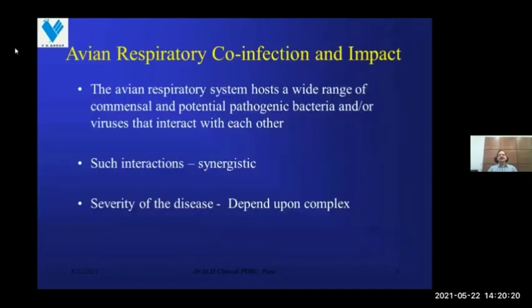The avian respiratory system hosts a wide range of commensal and potential pathogenic bacteria and/or viruses that interact with each other. Most of the time such interactions are synergistic in nature. The severity of the disease complex depends on the presence or absence of these pathogens.